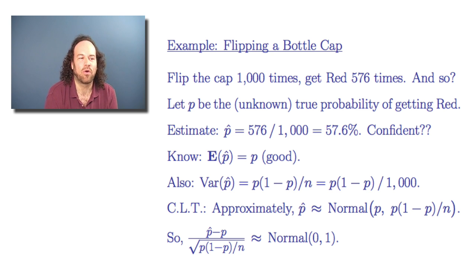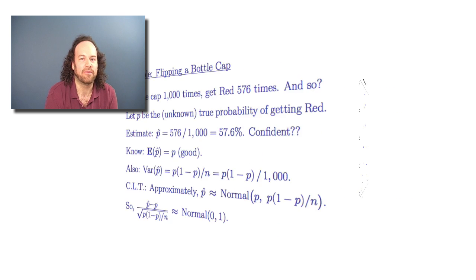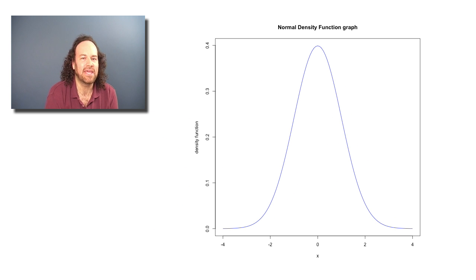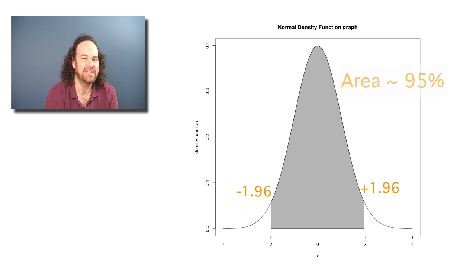Now, the standard normal distribution is something we know all about. We can graph and we can get the probabilities for it too. For example, it turns out for the standard normal distribution that the area under the curve between minus 1.96 and plus 1.96 is just equal to 95% of all the area.